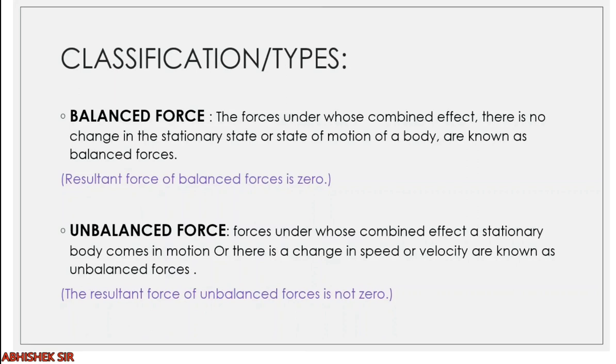Another classification is balanced force and unbalanced force. Forces under whose combined effect there is no change in the stationary state or state of motion are known as balanced forces. For example, if two students push a table from opposite directions with equal force, the resultant net force is zero and the table will not move. Unbalanced forces are those under whose combined effect a stationary body comes into motion or there is a change in speed or velocity. The net force of unbalanced forces is not zero, and the object moves in the direction where the greater force is applied.